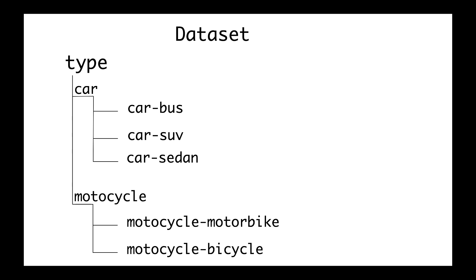There is one more naming convention to note. For parent folders the name is simply car or motorcycle. For subfolders, you put both the name of the parent folder and the name of the current folder — for example, car-bus for the bus subfolder, or motorcycle-motorbike. This helps keep the whole hierarchy in the label of the classes for every image, which is very useful for prediction and training. I will show you how to use this convention in the implementation and you will understand how important it is for both training and prediction.